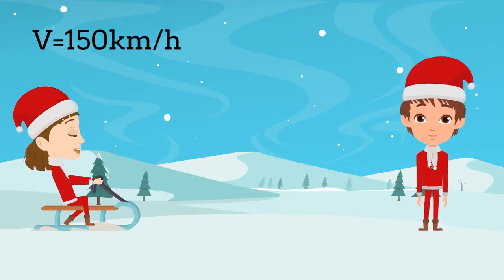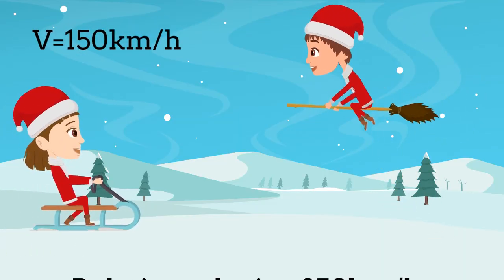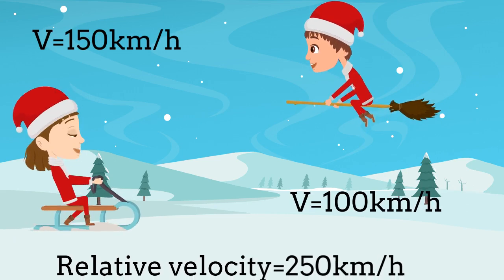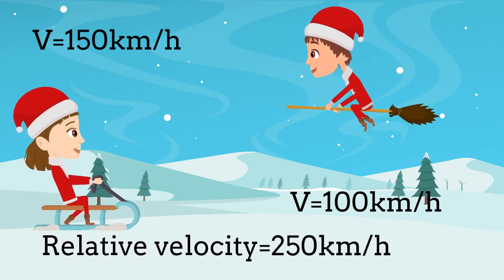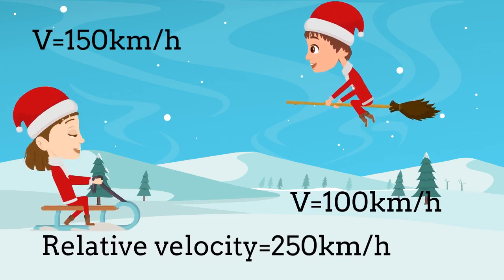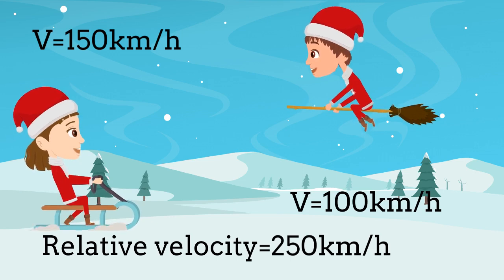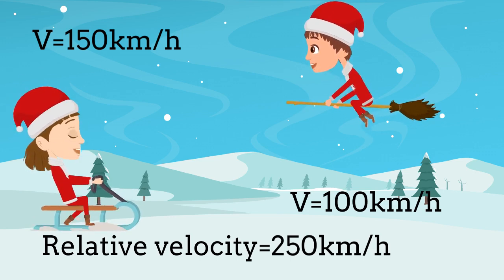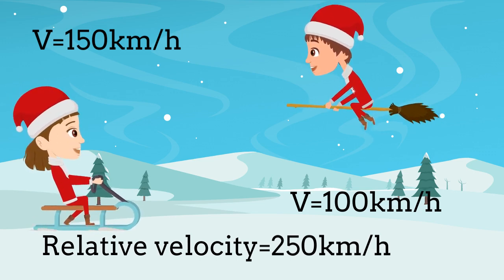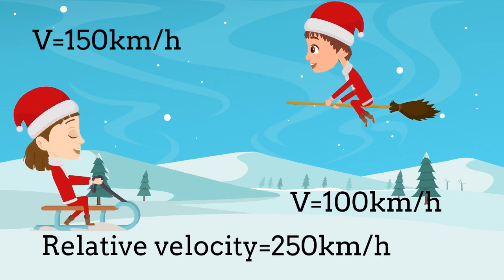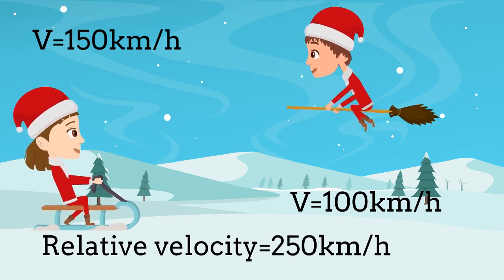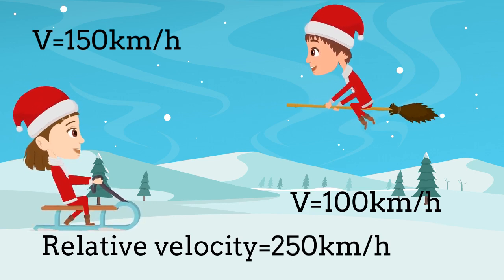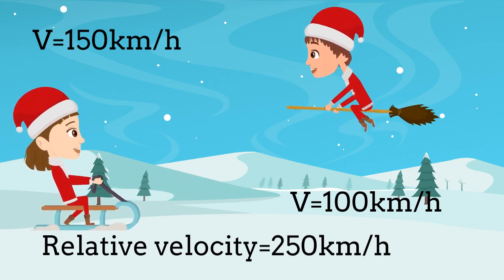Let's assume now that Elena is driving her vehicle at the speed of 150 km per hour. On the other hand, her friend William, who is a magician, is flying at the speed of 100 km per hour pointing toward her. Their relative speed is then 250 km per hour, which is just the superposition of both velocities. This is the case because they are approaching each other.